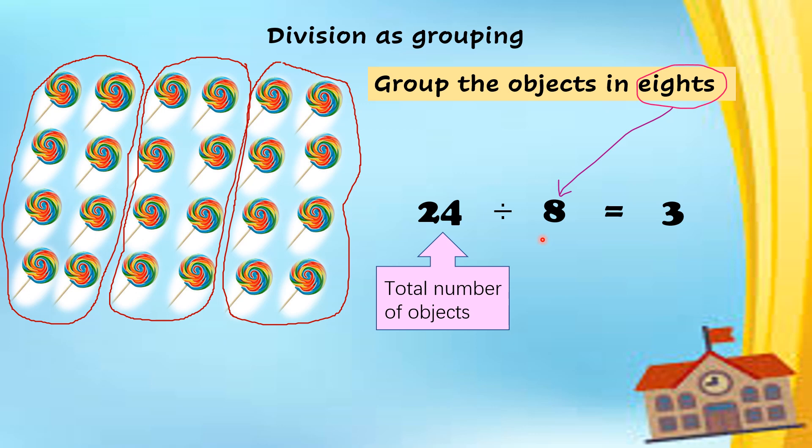8 is the number of lollipops in a group. Bilangan lollipop di dalam satu kumpulan. And 3 is the number of groups. Bilangan kumpulan. 1, 2, 3. 3 groups.